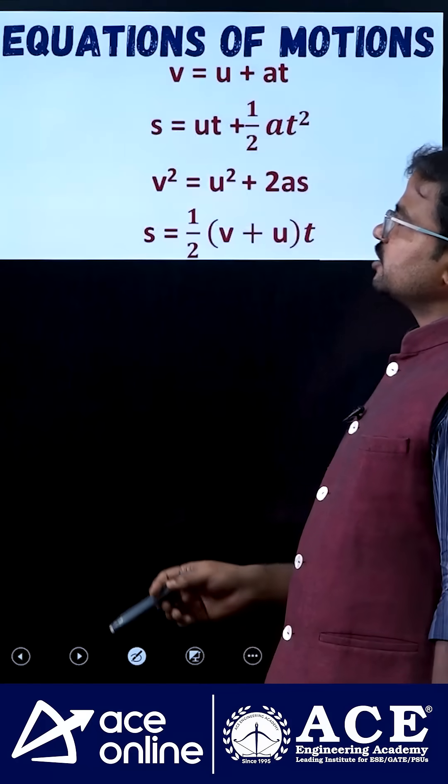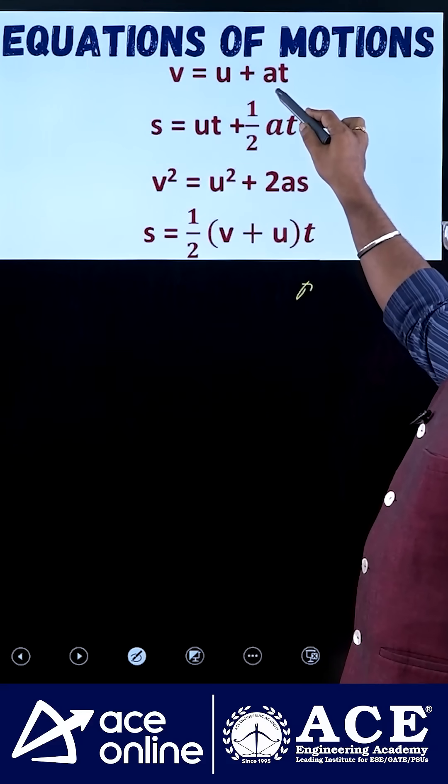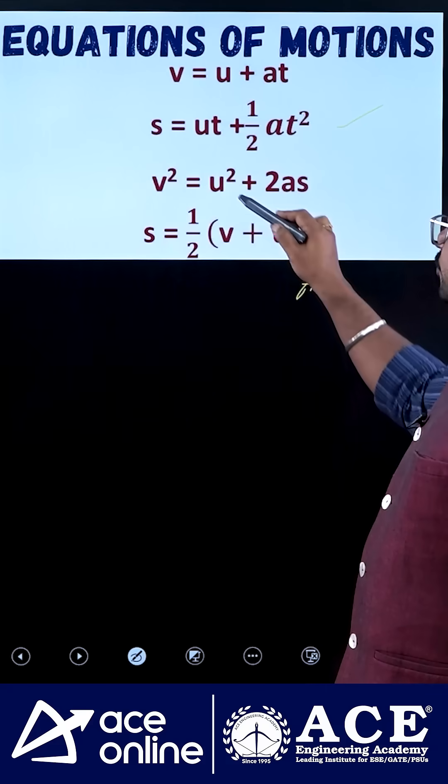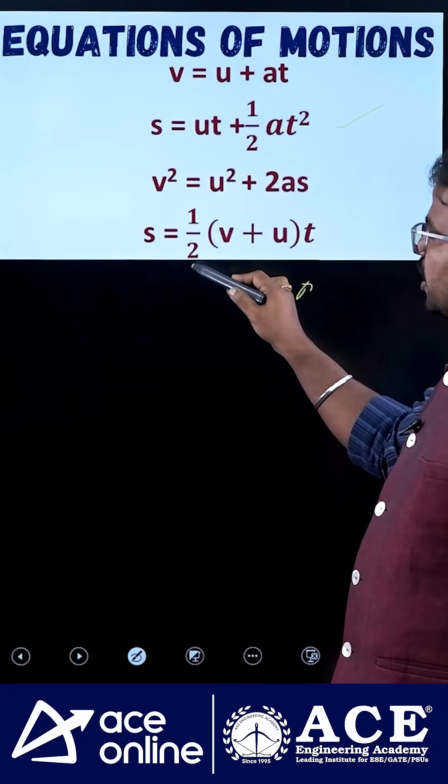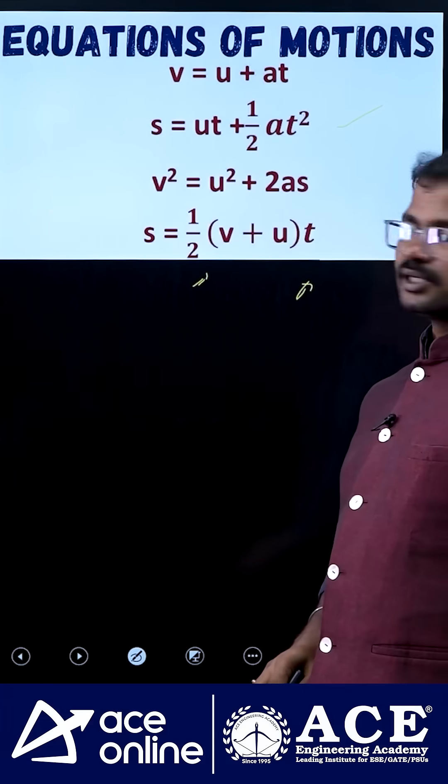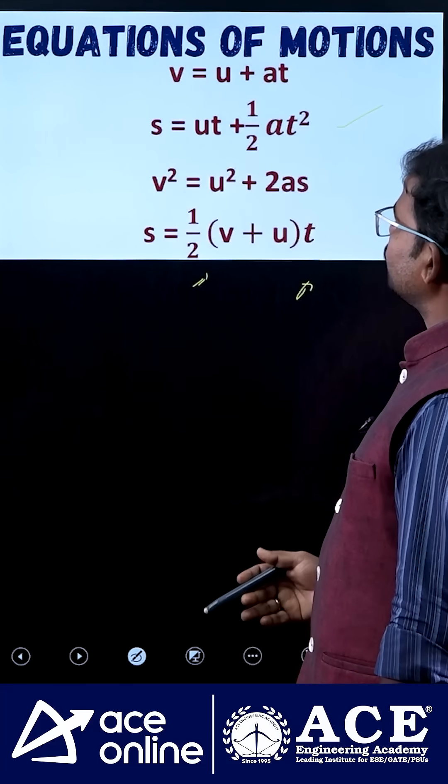Actually, this equation is considered as an equation of motion. So v equals u plus at. Next, s equals ut plus half at square. Next, v square minus u square equals 2as. Next, s equals half into v plus u into t. So these are the equations of motions we have.